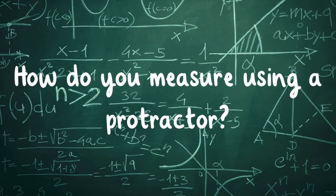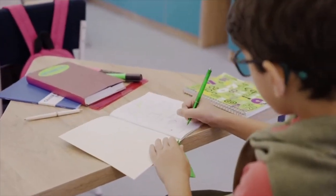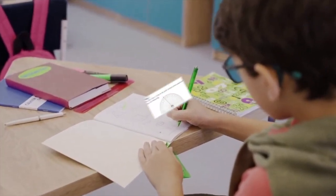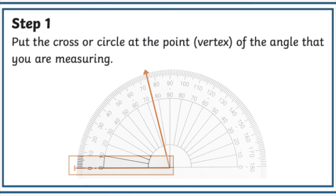How do you measure using a protractor? Although it may seem tricky to understand at first, we promise protractors are not difficult to use. First, put the cross or circle at the vertex of the angle that you are measuring.